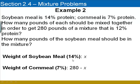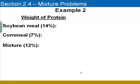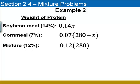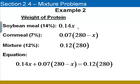To calculate the actual protein from each meal, we'll multiply 14% times X and 7% times 280 minus X. The weight of the protein for the soybean meal, again, is 0.14X. For the corn meal, that's going to be 0.07 times 280 minus X, percentage times the total weight of corn meal. Finally, for the mixture, that's going to be 12% of the 280 pounds. And that will lead to this equation. Add the protein from the first type of meal to the protein from the second type of meal, and that has to equal the protein from the mixture.